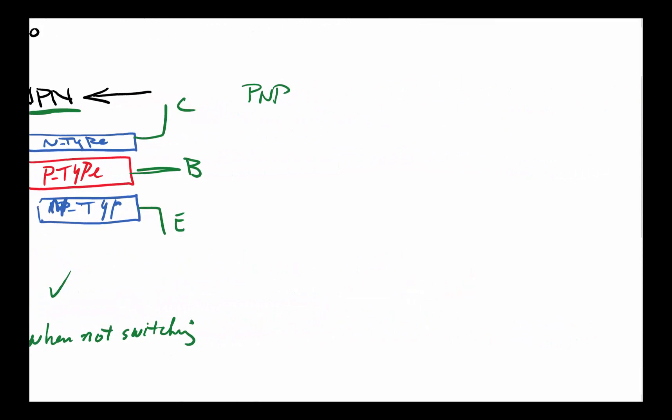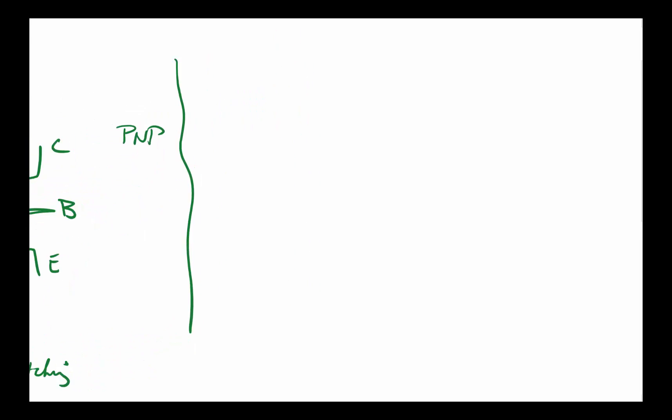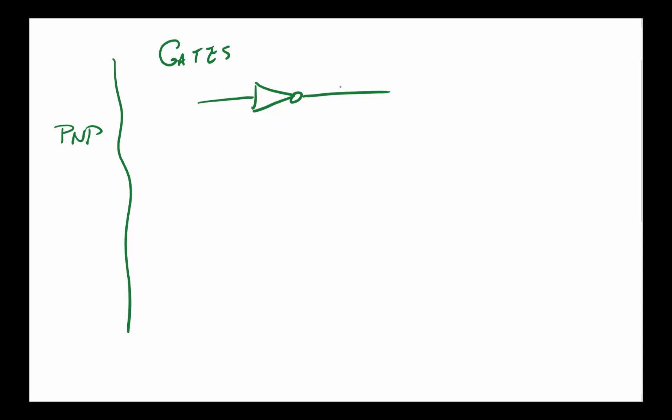Once I have a transistor, the next level of complexity I can create is called gates. One of the simplest gates is what we call an inverter. Its job is to take whatever logic you put in here—let's say if A is one, we're going to have A prime, also called NOT. Both of these mean A is inverted. If you put a zero in, you get a one out. That's the simplest gate we have.